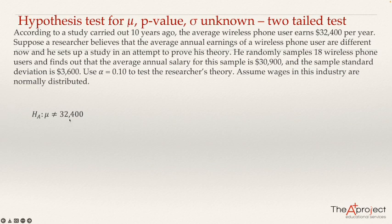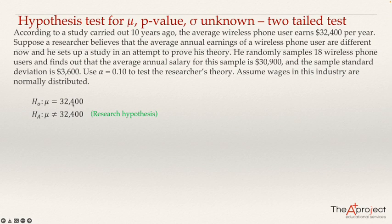The alternative hypothesis is the research hypothesis. So the null hypothesis is the opposite: mu equals $32,400.